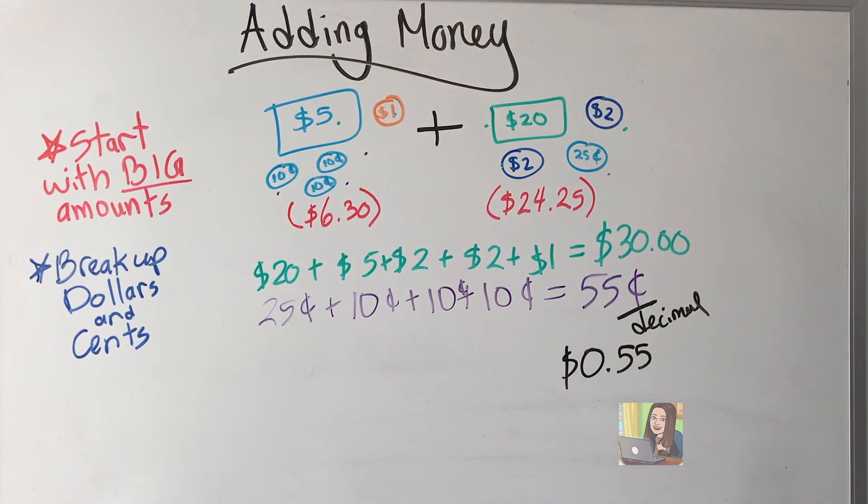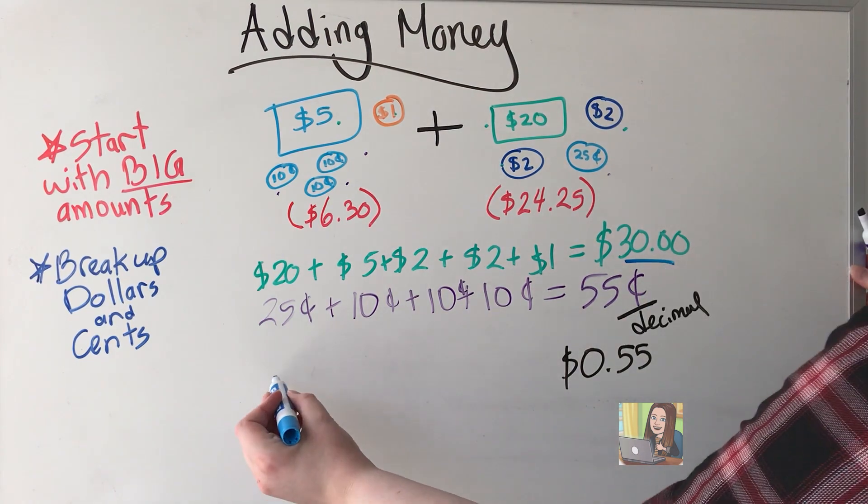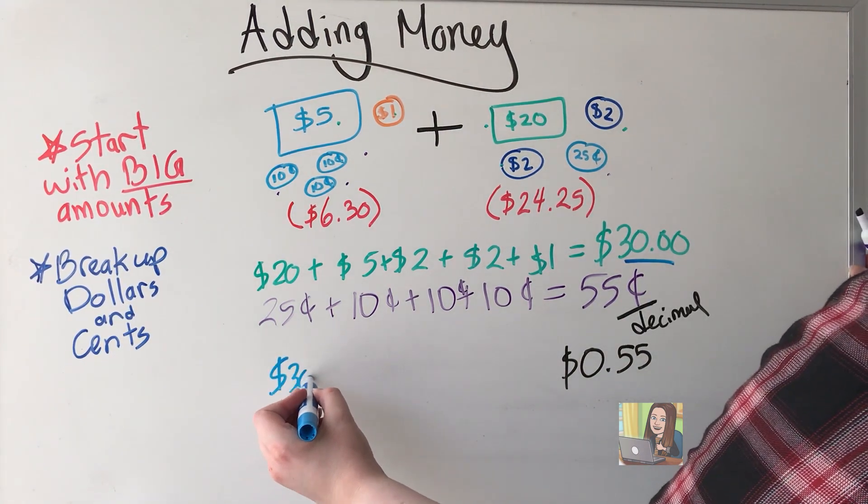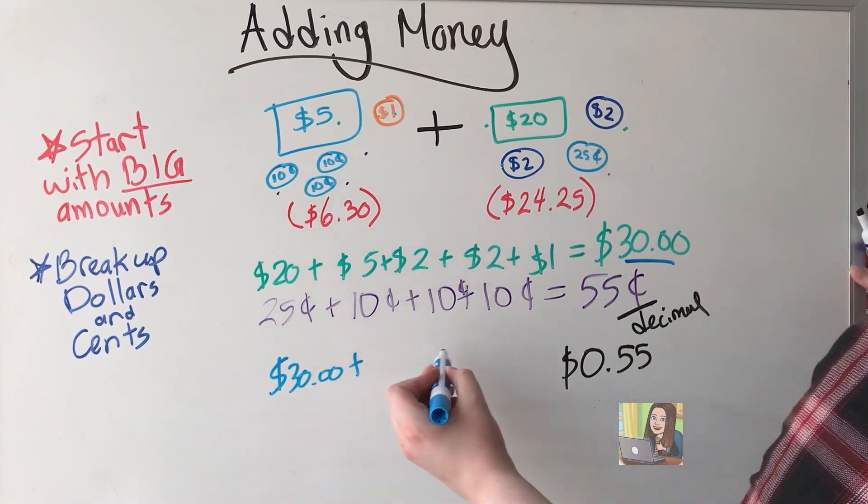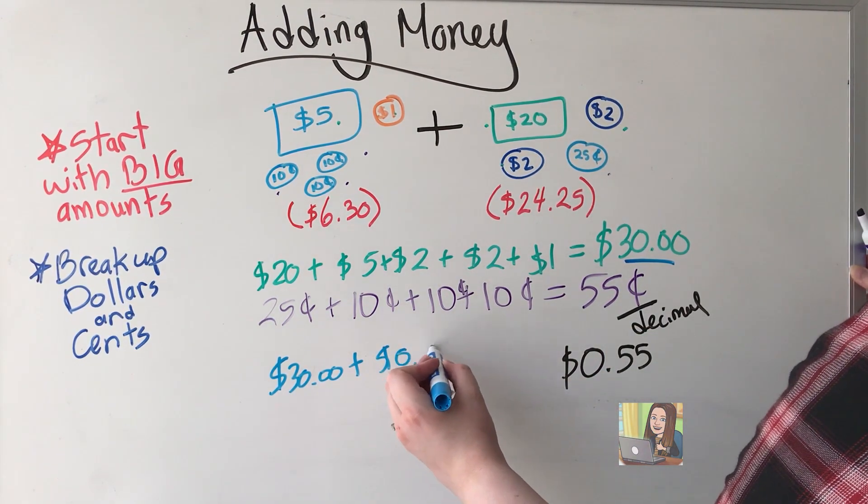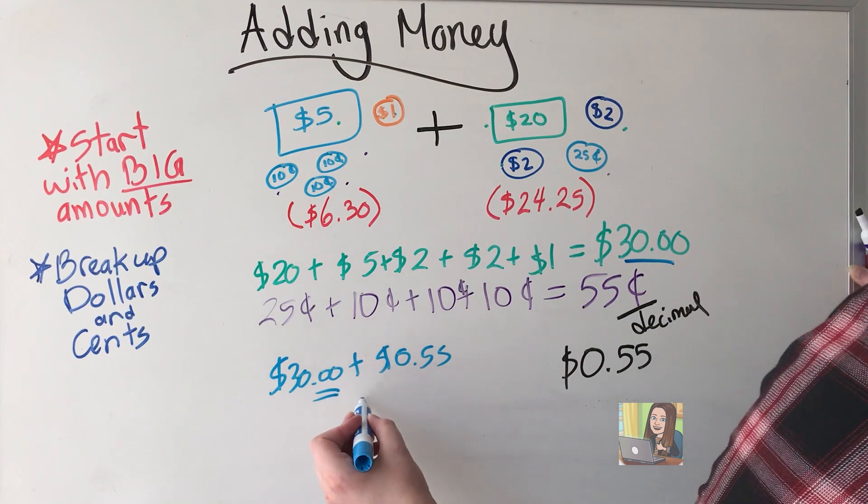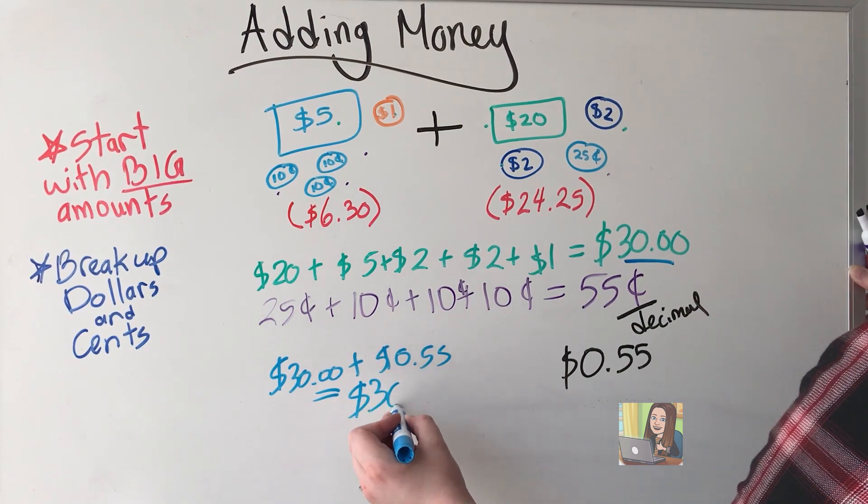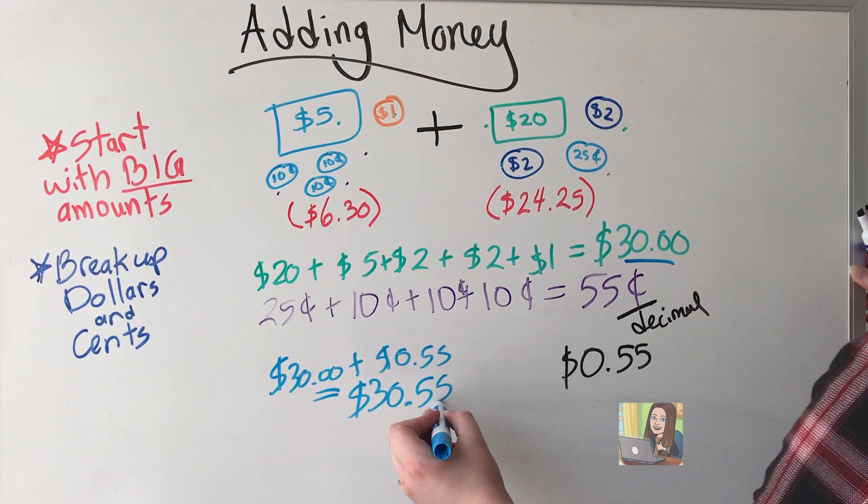Now we're going to add up our totals. We have $30 plus 55 cents gives me $30 and 55 cents.